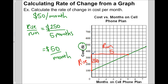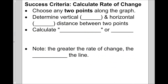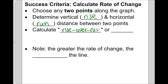That's another method of calculating the rate of change. Here is the success criteria: first, choose any two points along the graph — pick points that are on the corners of the grid so you can read them clearly. Next, determine the vertical distance, which we call the rise, and the horizontal distance, which we call the run. Then calculate rise divided by run. We're going to do more examples, so hopefully it will be clearer in a little bit.